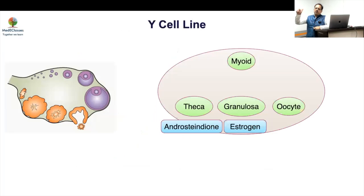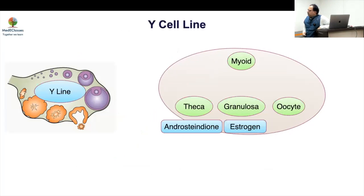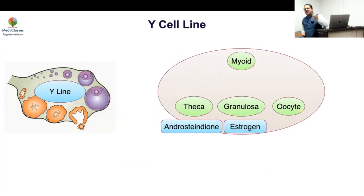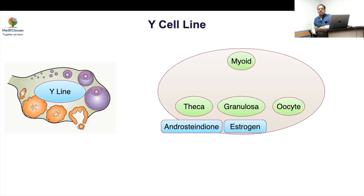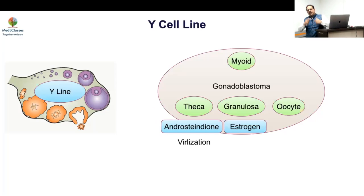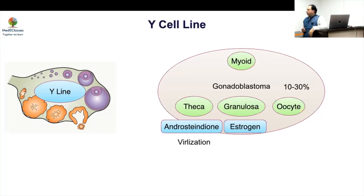The next important concern is the risk of malignancy. If there is a Y cell line, certain areas of the gonad may differentiate towards testicular tissue, creating a risk of malignancy. The gonad may develop gonadoblastoma — technically a benign condition — but gonadoblastoma carries a 10–30% risk of further developing into germinoma. Therefore, prophylactic gonadectomy is recommended when there is a Y cell line with virilization or marker chromosome.